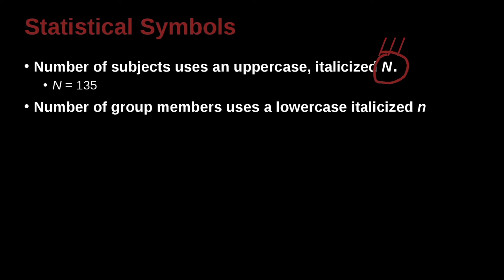Also, you have a group membership, which would be a subgroup, a subsample. For that subsample or group, you use a small n. Big N is the overall sample, small n is the subgroup sample. And again, pay attention to that N. It's a small n, but it's italicized N.